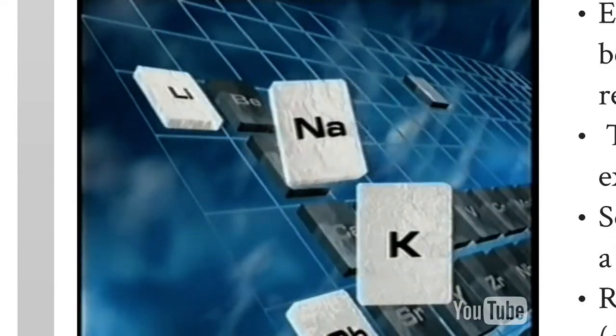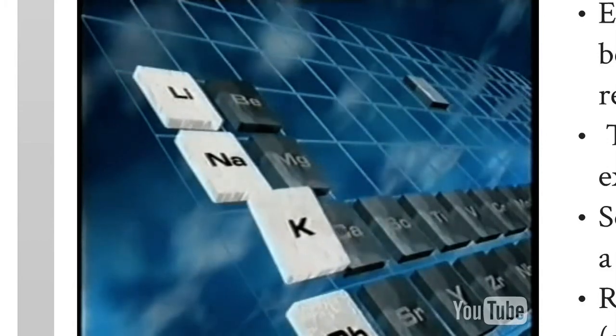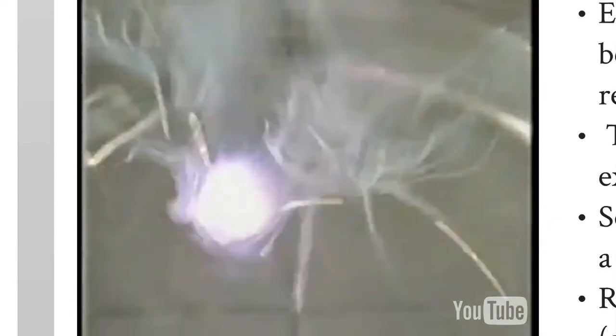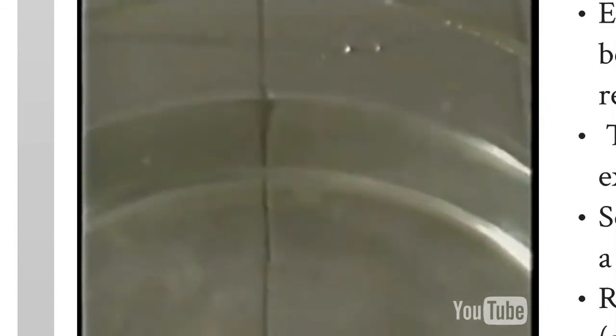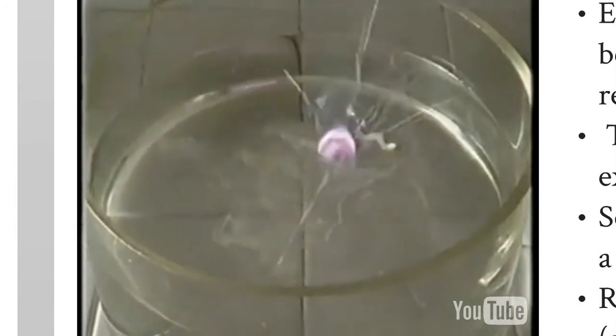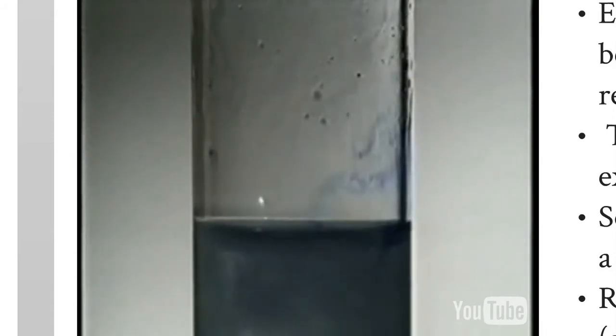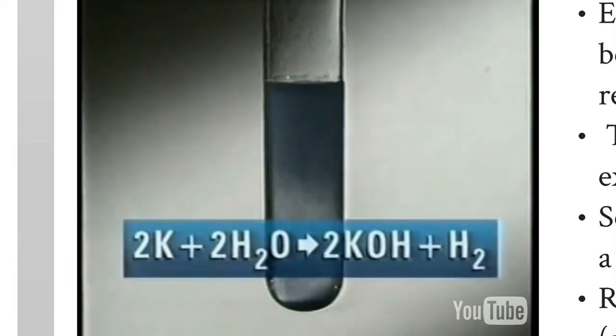Sodium is more reactive than lithium — it's below lithium in the periodic table. Potassium is below sodium, so how do you expect potassium to behave? Potassium is definitely more reactive than sodium and lithium. It reacts immediately and the hydrogen produced ignites on its own. Universal indicator goes blue. Potassium reacts with water to form potassium hydroxide and hydrogen.